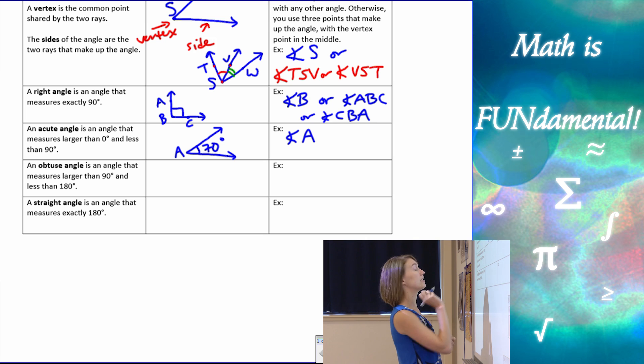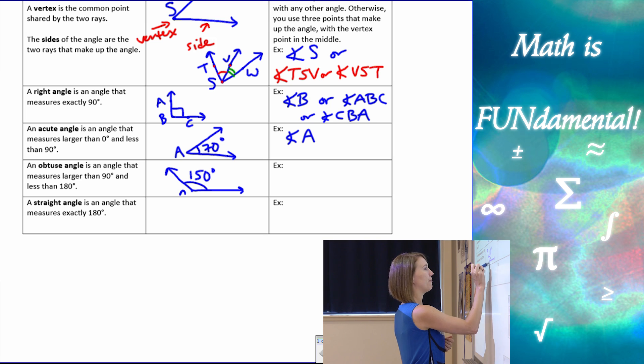An obtuse angle is going to be larger than 90 but less than 180. So it's going to look something like this angle, this whole thing here. So remember 90 degrees would be perpendicular, which if you don't know that term you'll learn that later. And then if we extend that angle larger than 90 but not quite 180, that's where we get this. So this would be, I don't know, like 150 degrees. I'm just eyeballing it. And we'll put an M there. We'll name it angle M.